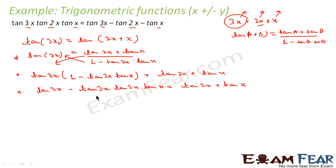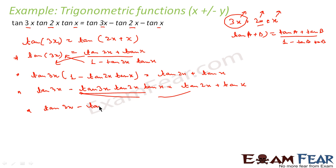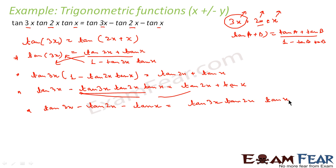Now let's check where we are — we wanted to prove something like this. We take tan 2x and tan x to the left hand side. So this becomes: tan 3x − tan 2x − tan x = tan 3x · tan 2x · tan x. Observe that this is exactly what we were asked to prove, and we have proved it.